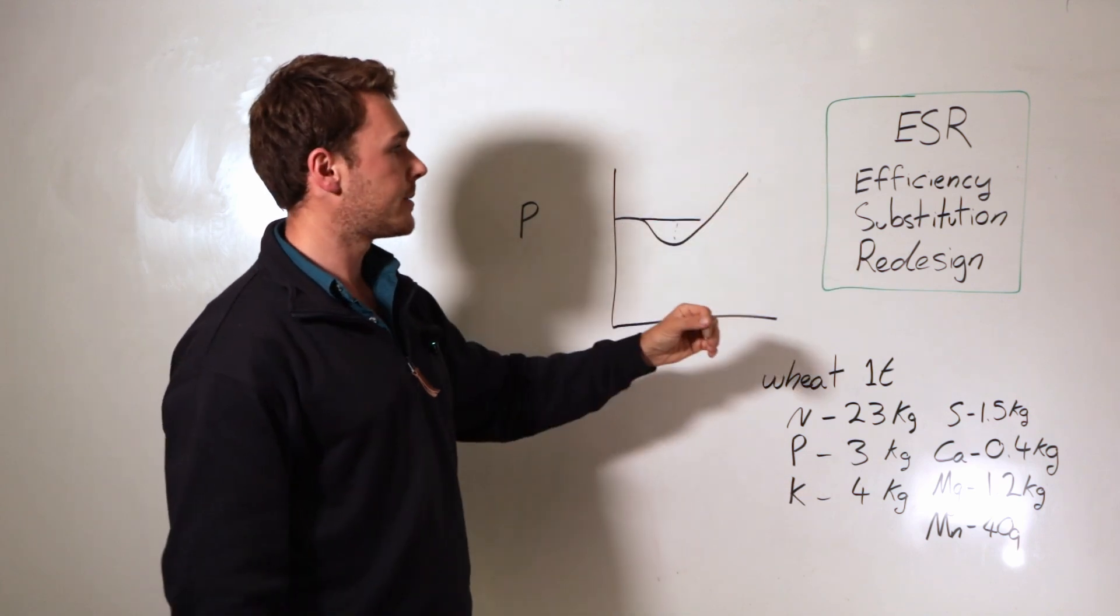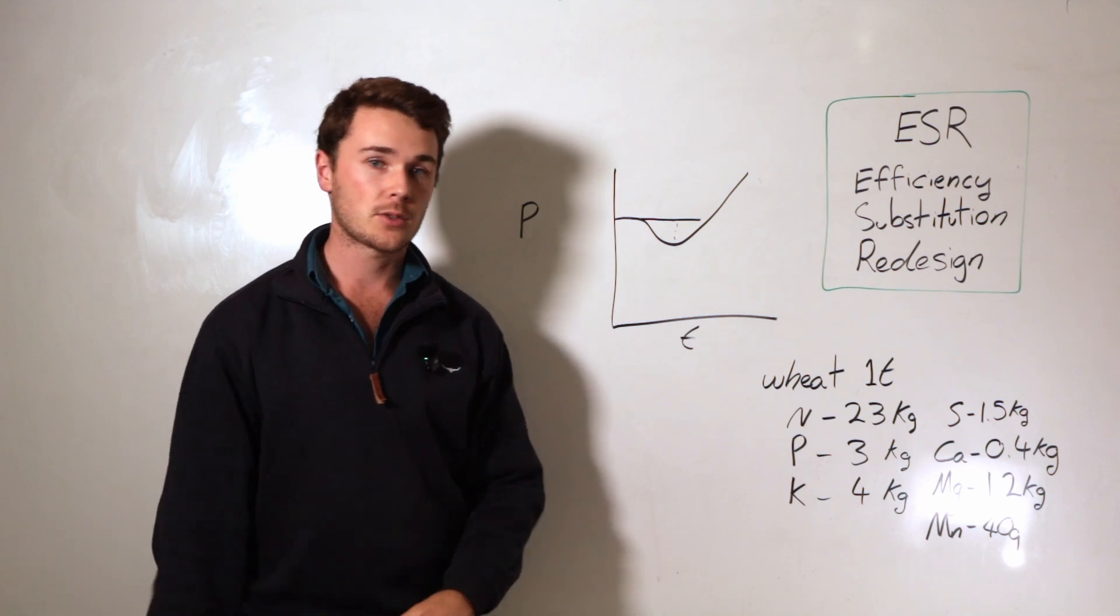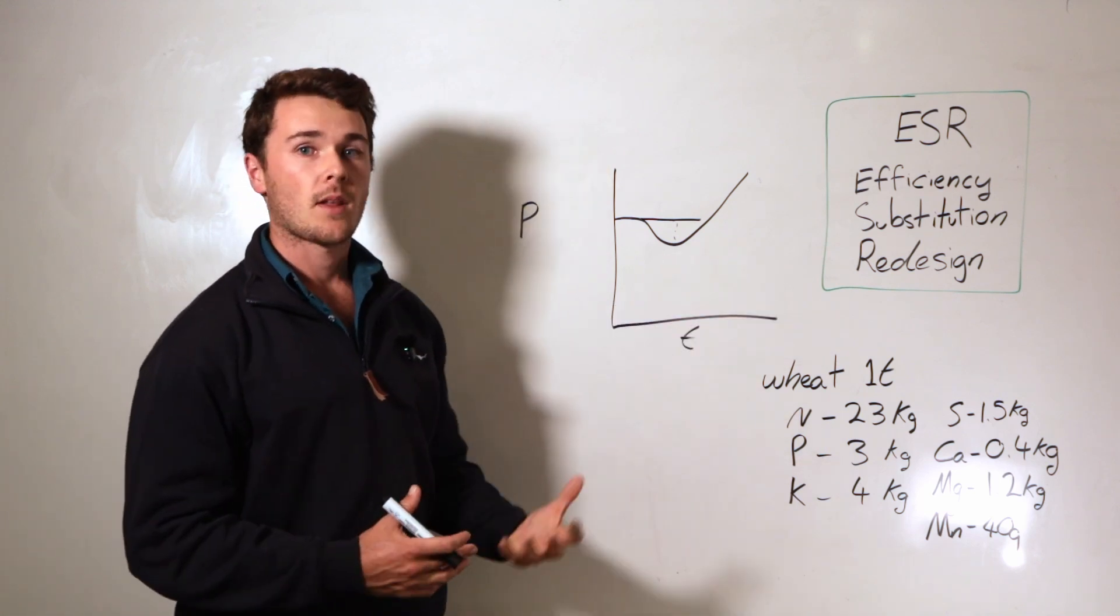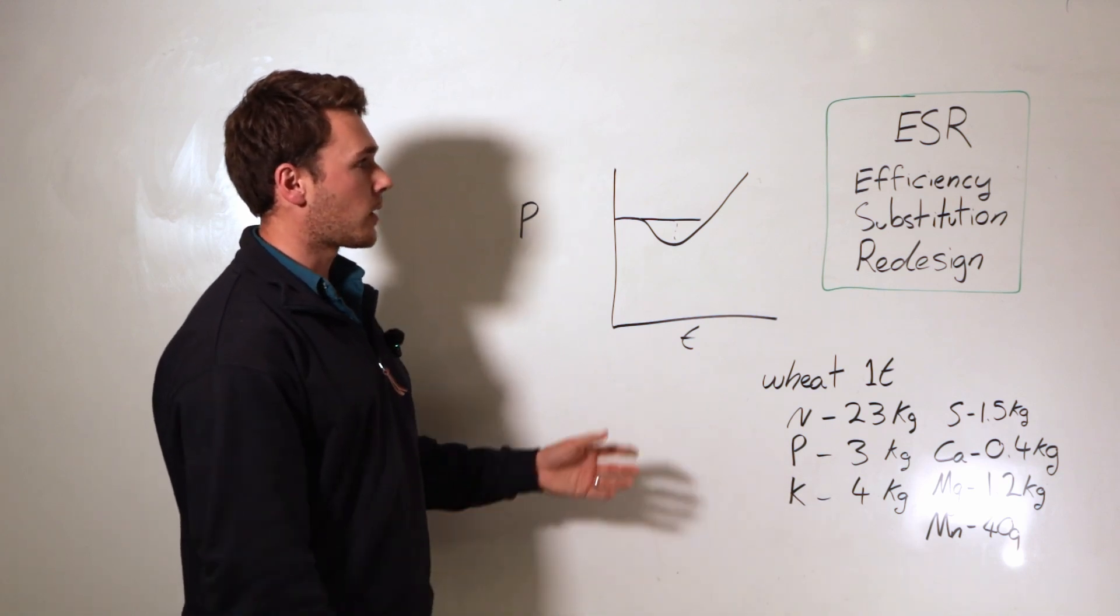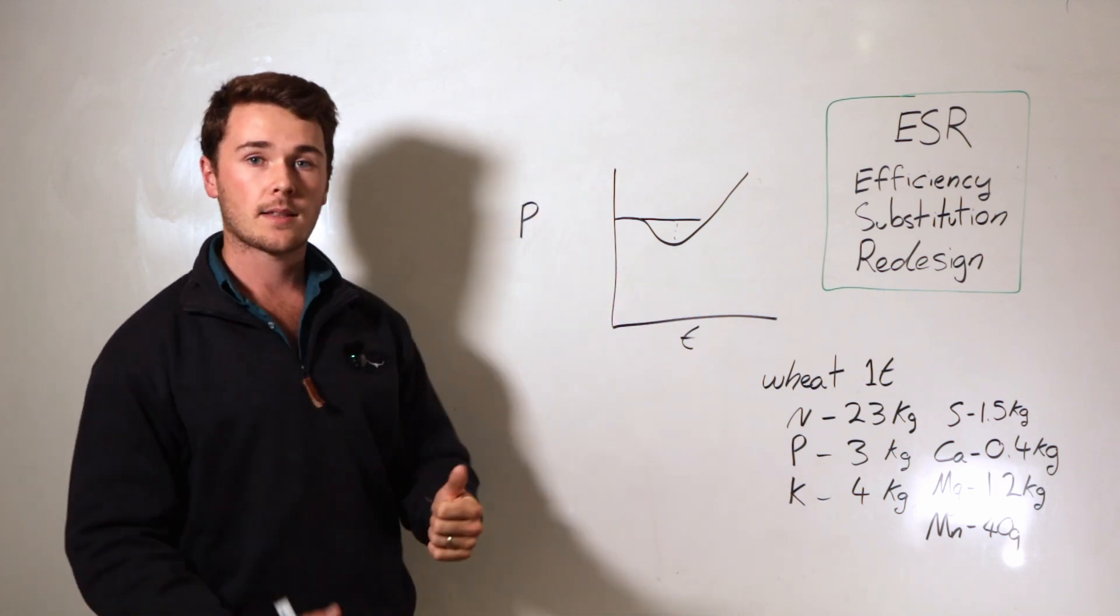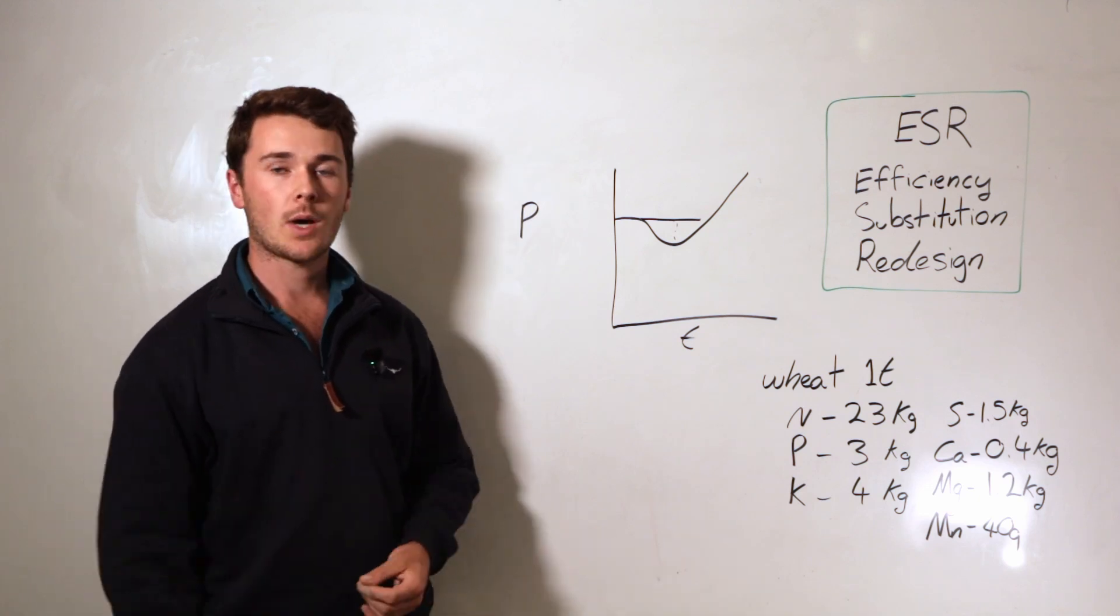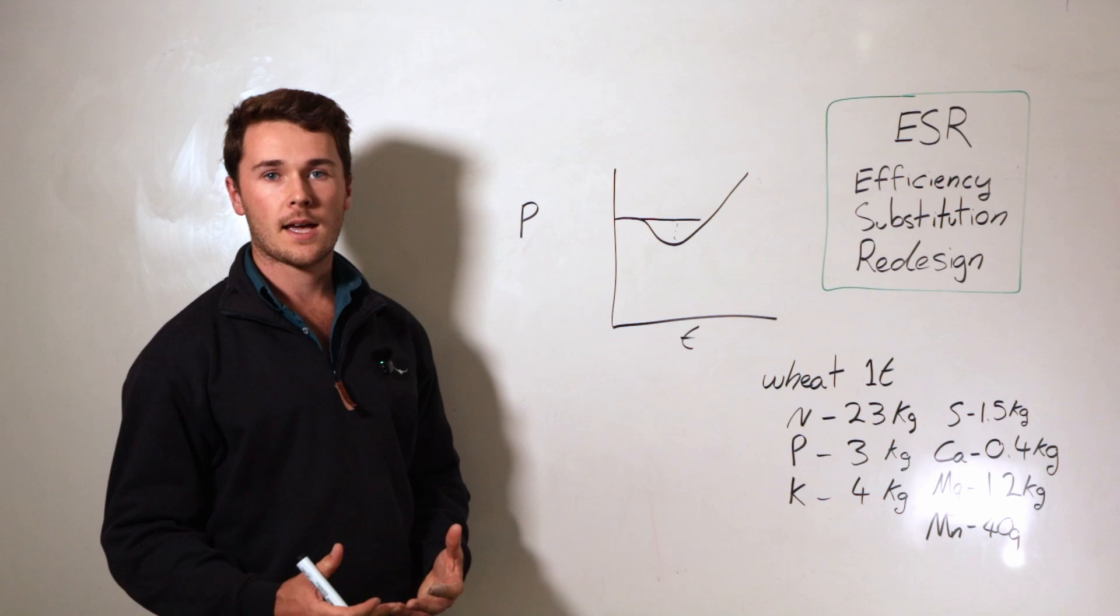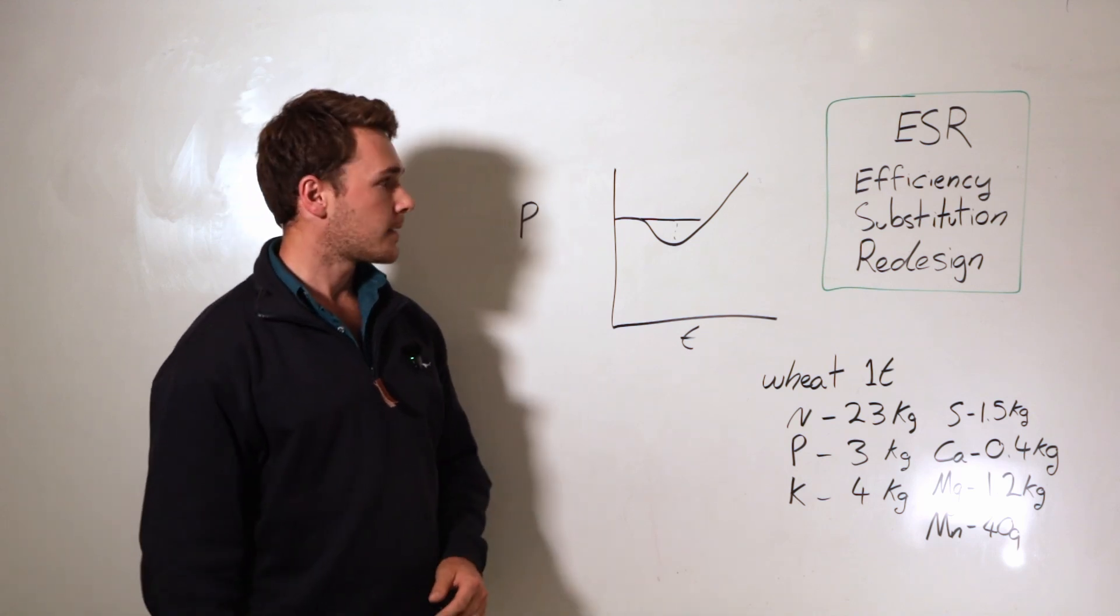Finally, once we improve the efficiency of our system, we substitute some of the negative things out with some more beneficial things. We can actually redesign the system without taking too much risk because we've already laid the framework for that. So these are things like cover cropping, crop selection and rotation, intercropping or having like polycultures, changing up our tillage methods, as well as integrating livestock into that system.